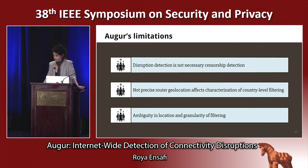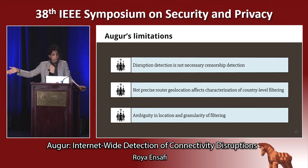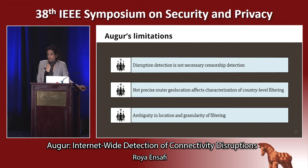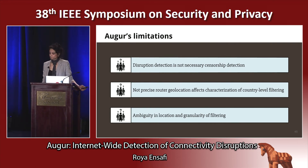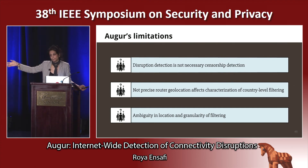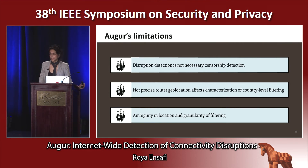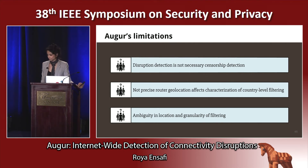Augur is great but has its own limitations. Although connectivity disruption is a strong indication that censorship might be happening, it's not necessarily so, and we cannot distinguish that. Augur's geolocation accuracy depends on public or commercial geolocation databases, which are notoriously bad for routers, so that is future work. Finally, using Augur we can say that there is blocking happening between a site and a reflector, but we cannot say at which hop the blocking occurs — whether it's the ISP, the person's government, or the server side. We need more techniques to determine exactly where it happens.